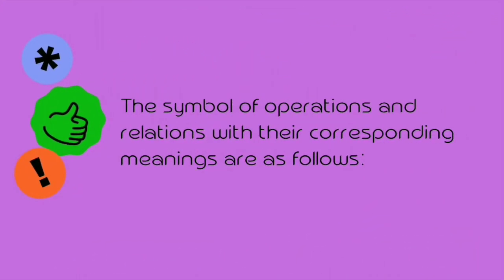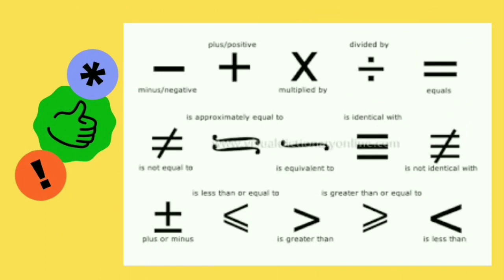The symbols of operations and relations with their corresponding meanings are as follows. First, we have the minus or negative sign. The cross is plus or additive. The x is multiply. The line with two dots is divide. Two lines together is equal. Two lines with a slash is not equal. The swirl lines mean equivalent to. Three lines means identical. Three lines with a slash means not identical. Plus and minus below means plus or minus. The triangle-like sign means less than or equal. The other one is greater than. Next is greater than or equal to. And the last one is less than.